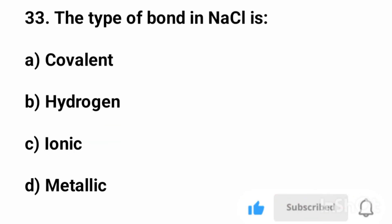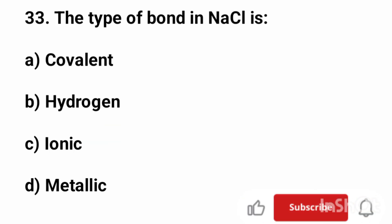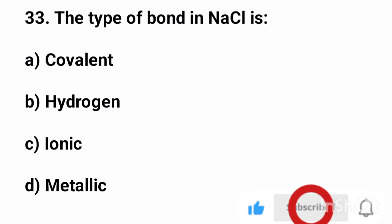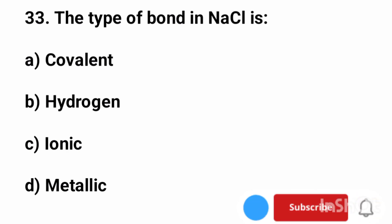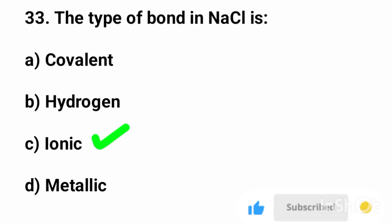Question number 33. The type of bond in NaCl is? The correct answer is option C, ionic.